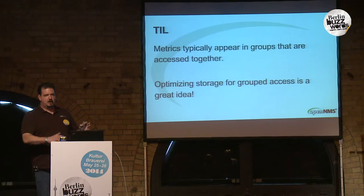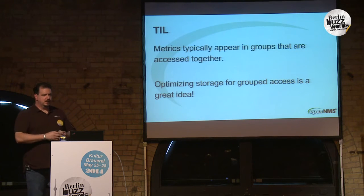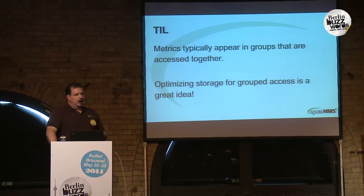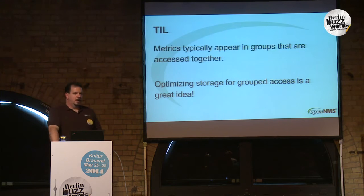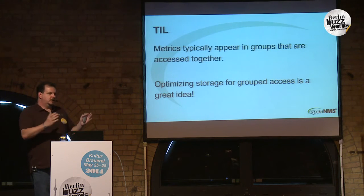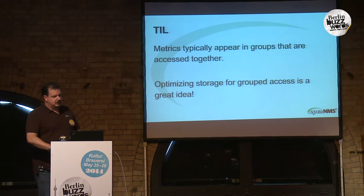One takeaway I get from RRD is that we access metrics in groups. RRD encourages this - you put similar, related metrics that you intend to access together within a single RRD. That is the natural way of modeling this type of data. If you think of graphing, how likely are you to graph incoming bytes from a network interface without also plotting outgoing on the same graph, or cores on a CPU, or one, five, and fifteen minute load averages? Most of these visualizations are interesting when they let you correlate multiple data points on a single graph.